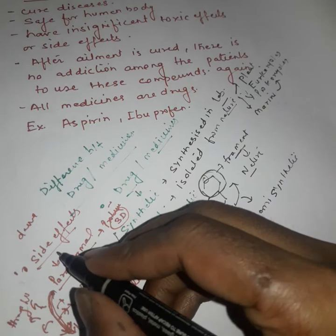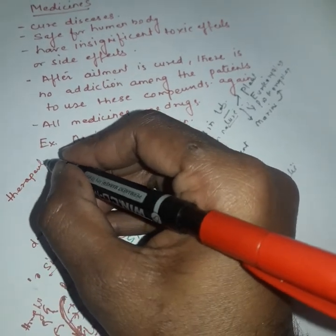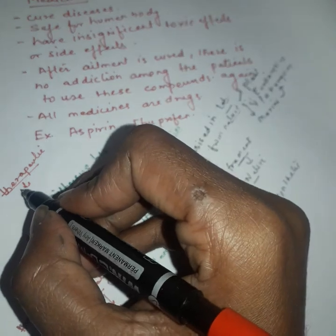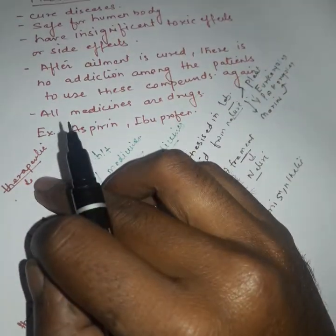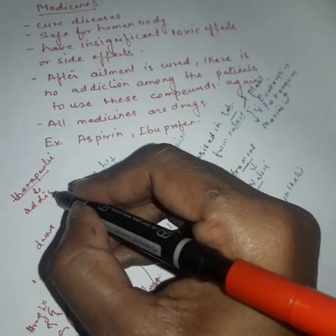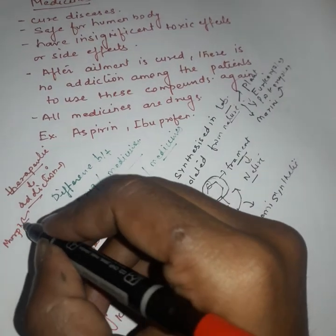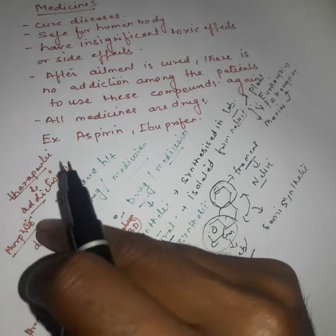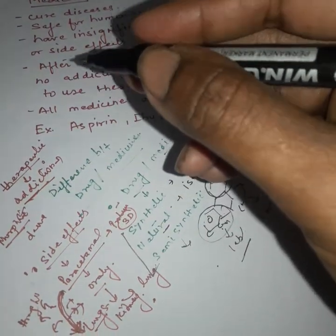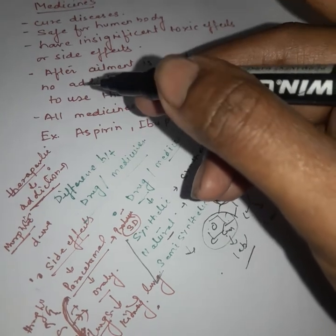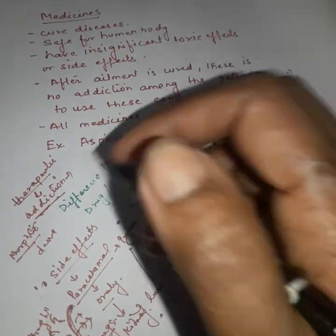So if you take any drug, some side effects may appear. The second term is therapeutics — any drug used for the cure of a disease is called a therapeutic. The third term is addiction: if you take morphine to cure pain, and after the pain is cured you keep taking morphine, that is called addiction — repeatedly taking a drug without having the disease.